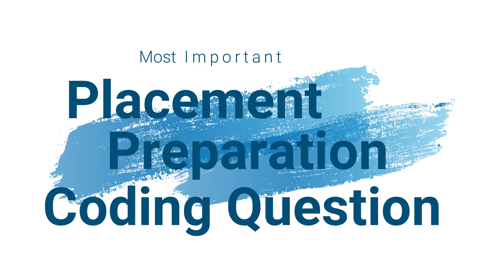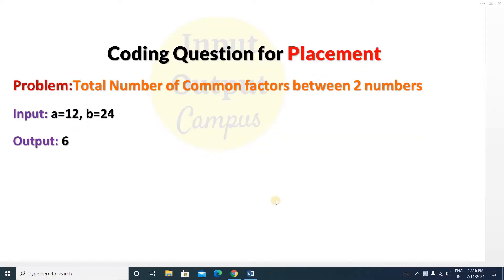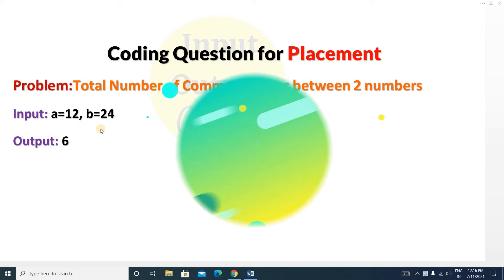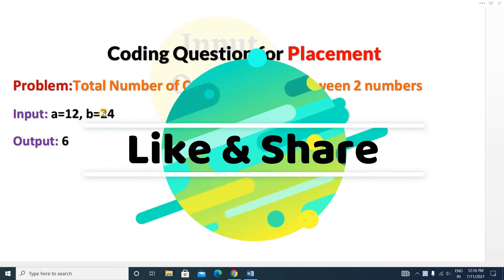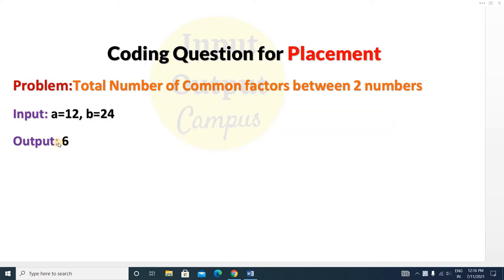Hello friends, welcome to Input Output Campus. Today in this video we'll discuss a coding question for placement. The question is: find the total number of common factors between two numbers. You will be given two numbers, suppose A and B, and you have to count the total number of common factors between them — for example, 12 and 24.